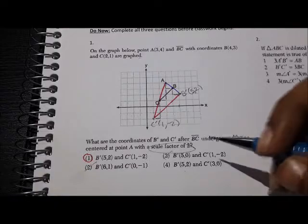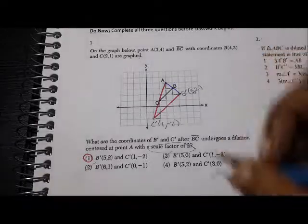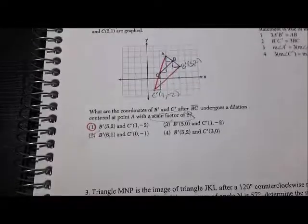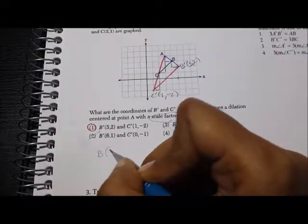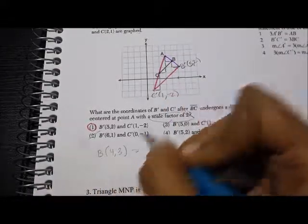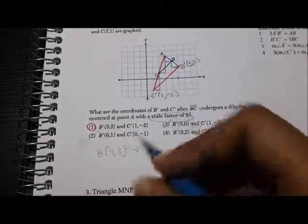Now, if we wanted to use the coordinates, we would do the following. We would say, okay, if I'm starting off with B, which is (4, 3), you first want to dilate it by the scale factor of 2.